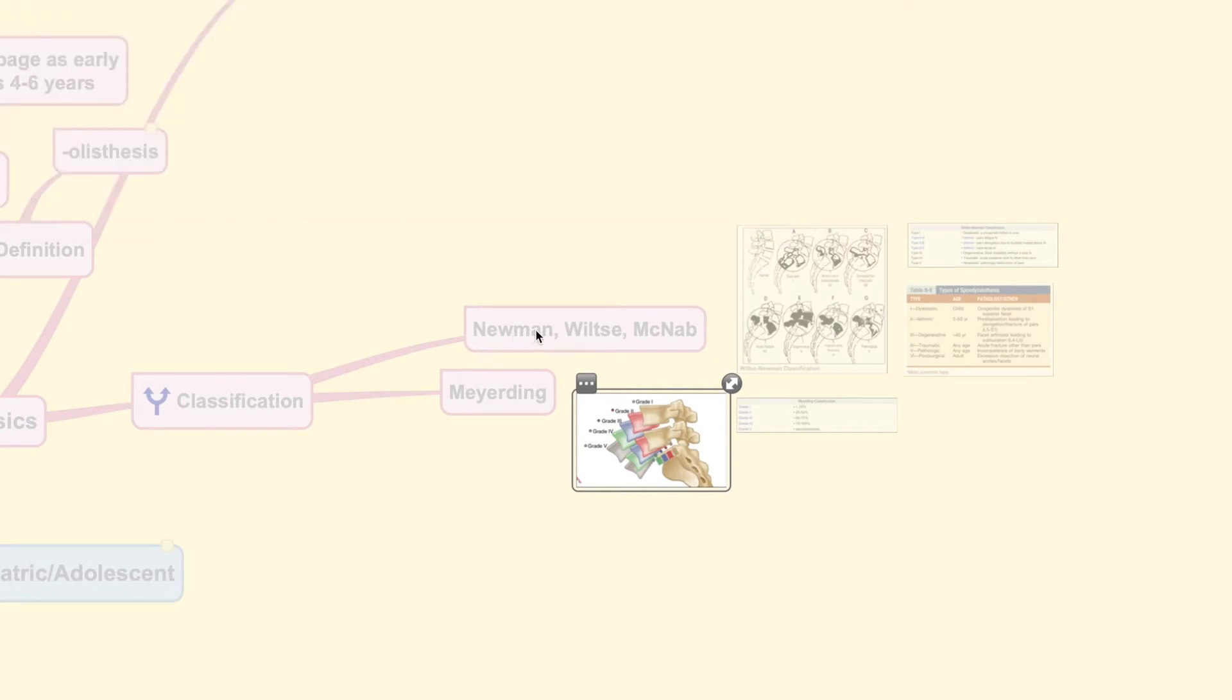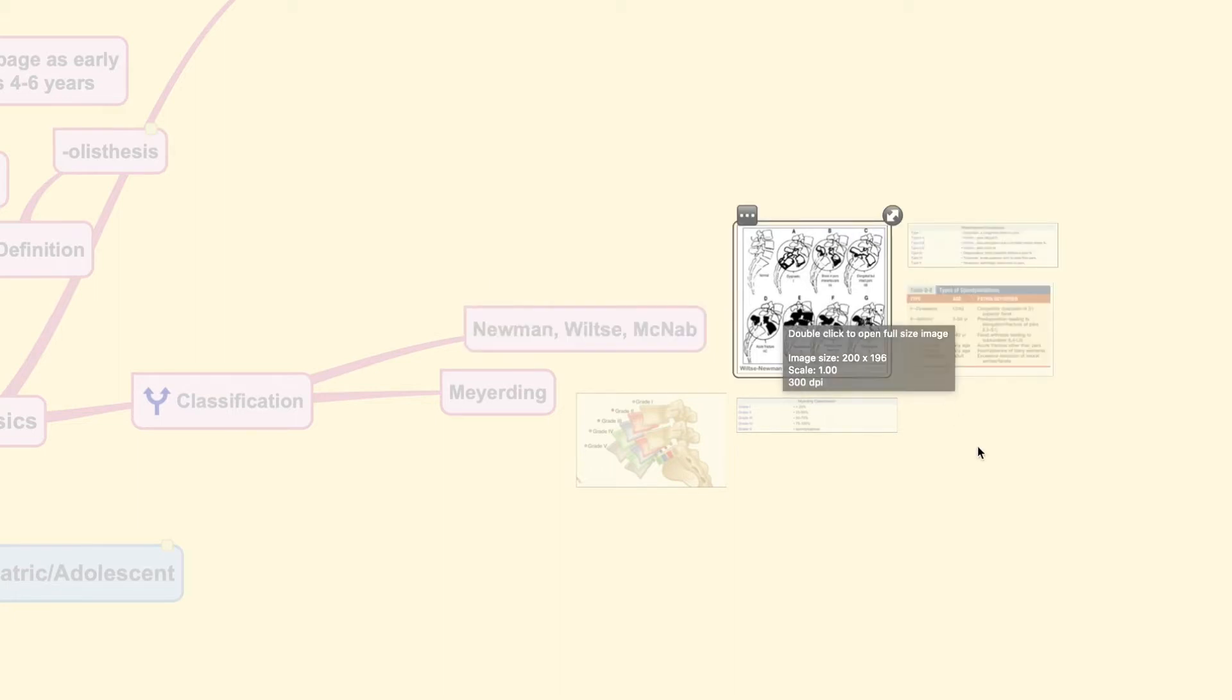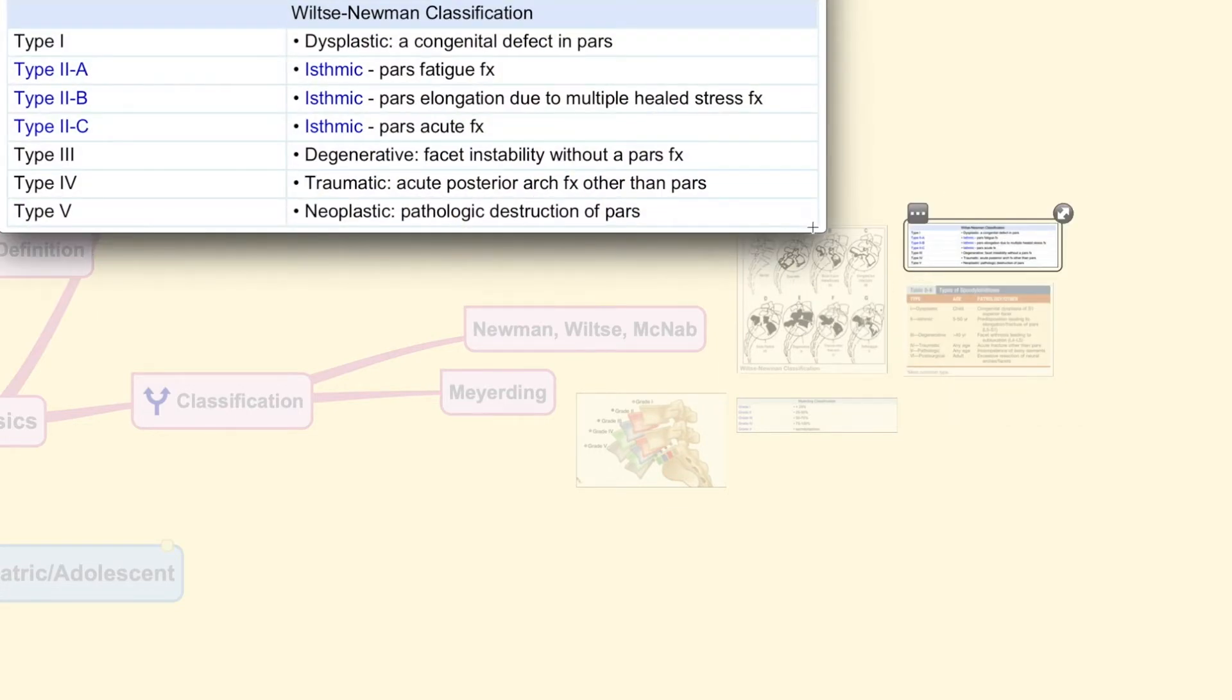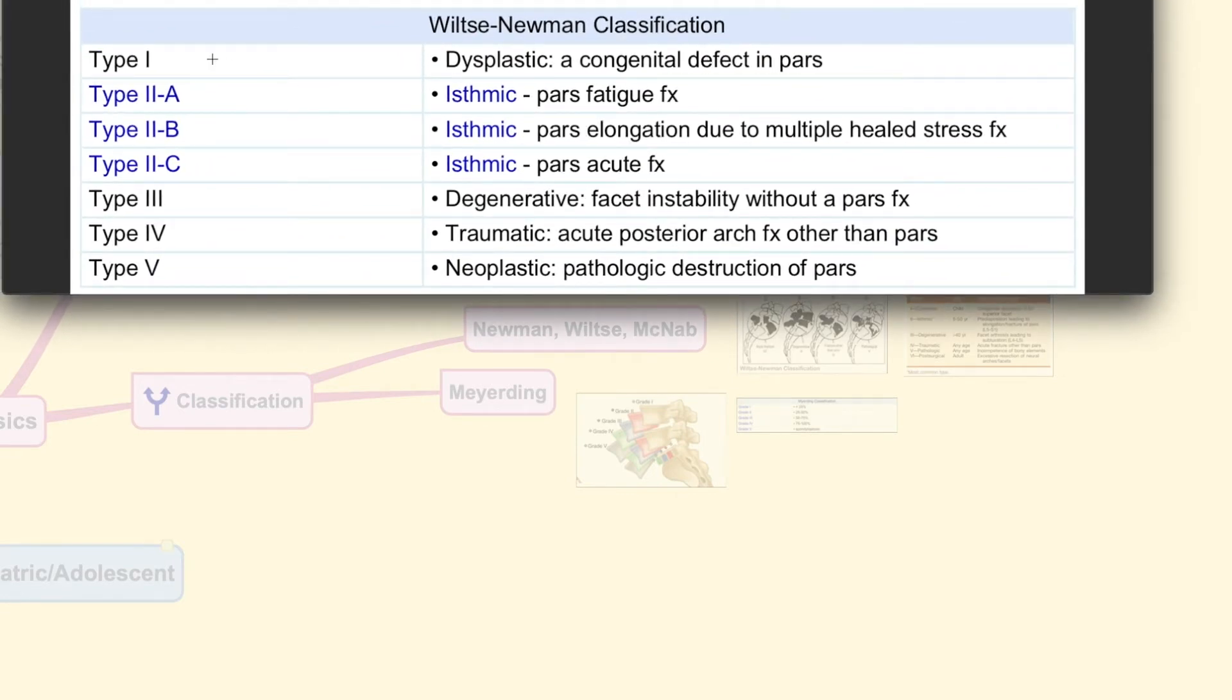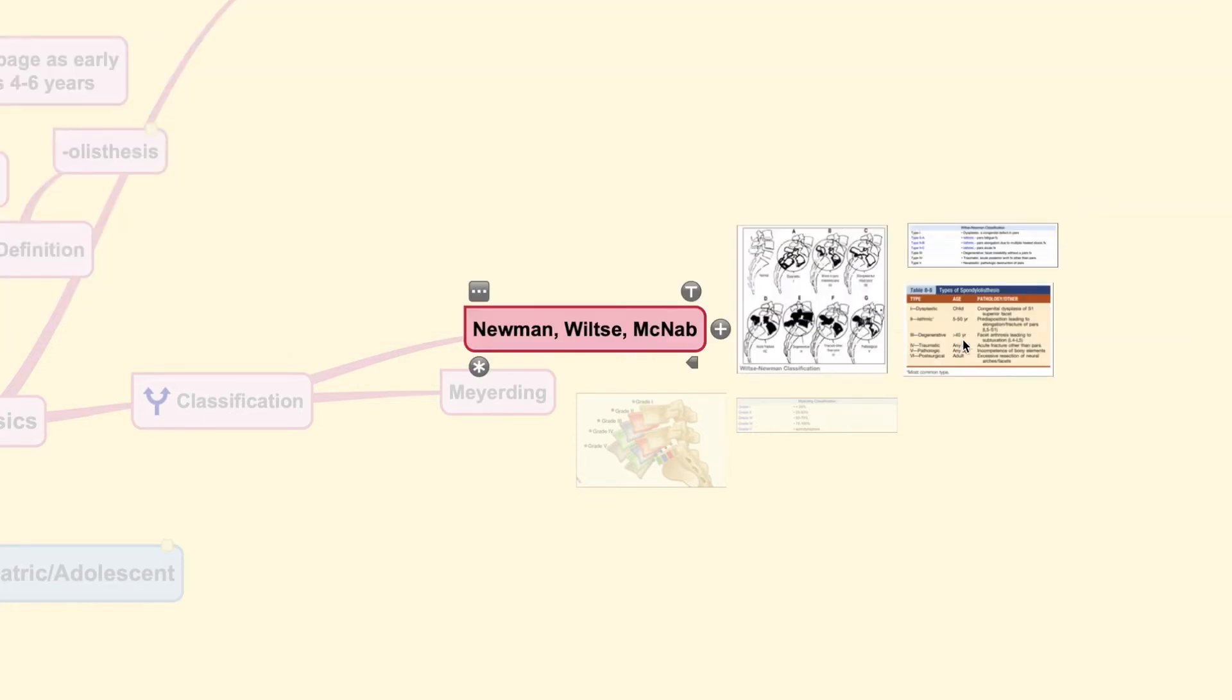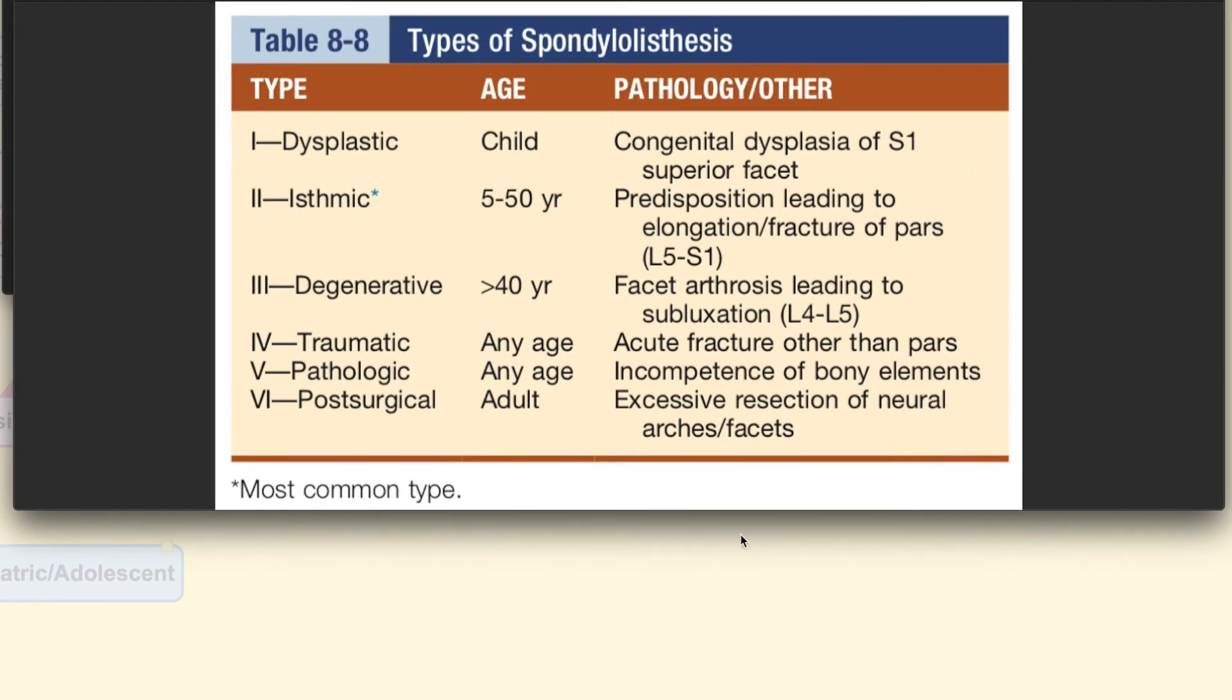Other classification systems would include the one mentioned by Newman, Wiltse and McNabb type, which further classify these conditions into its basic types such as the ones depicted here. This is another table that you could see depicting the various types of spondylolisthesis. You could say that this classification scheme is based on the etiological factor.